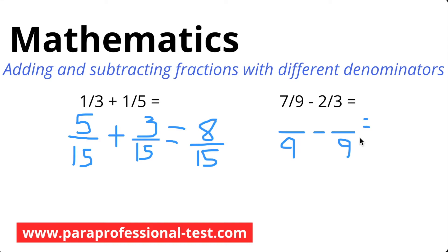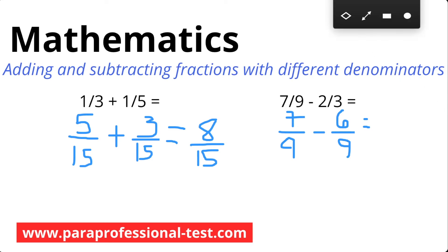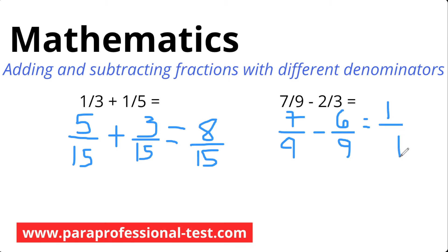Remember the rule: whatever we do to the bottom, we have to do to the top. For our first numerator, that means we'll take 1 times 7, which is 7. And we'll take 3 times 2, which is 6. Now we're left with 7 over 9 minus 6 over 9. It's time to subtract the numbers on top and keep the numbers on the bottom the same, giving us 1 over 9. Is that what you got? Excellent. Let's keep going.